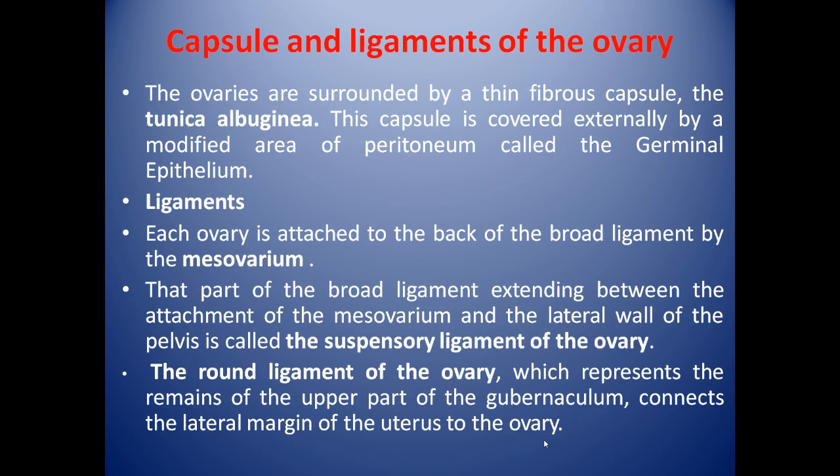Now we will see the capsule and ligaments of the ovary. The ovaries are surrounded by a thin fibrous capsule called the tunica albuginea, which is covered externally by a modified area of peritoneum called the germinal epithelium. Each ovary is attached to the back of the broad ligament by the meso-ovarium. The part of the broad ligament extending between the meso-ovarium attachment and the lateral pelvic wall is the suspensory ligament of the ovary. The round ligament of the ovary, representing the remains of the upper gubernaculum, connects the lateral margin of the uterus to the ovary.